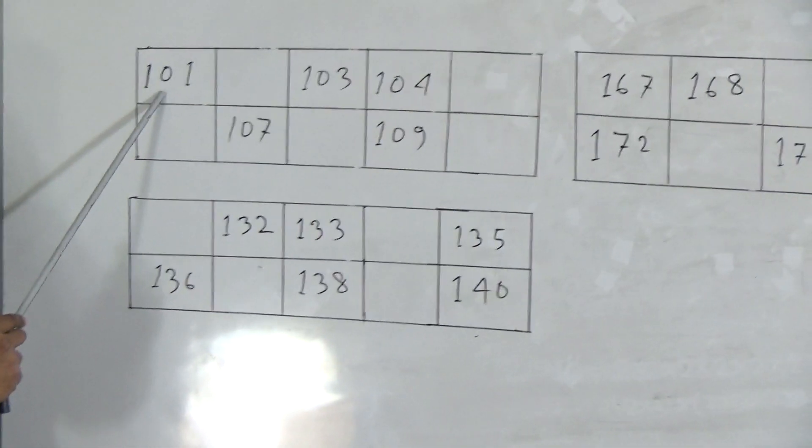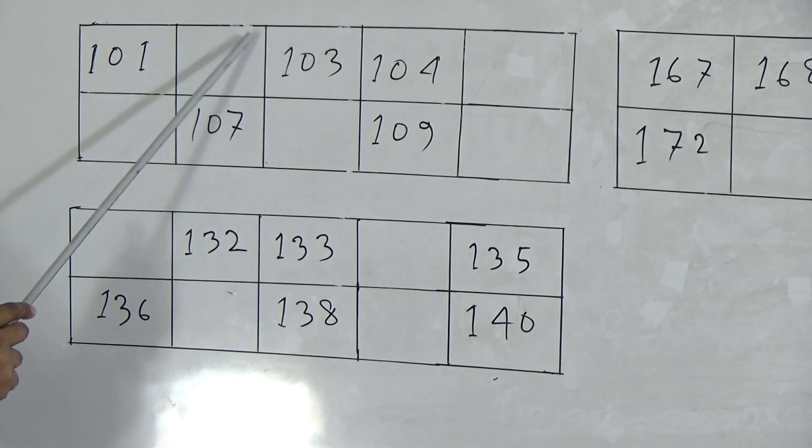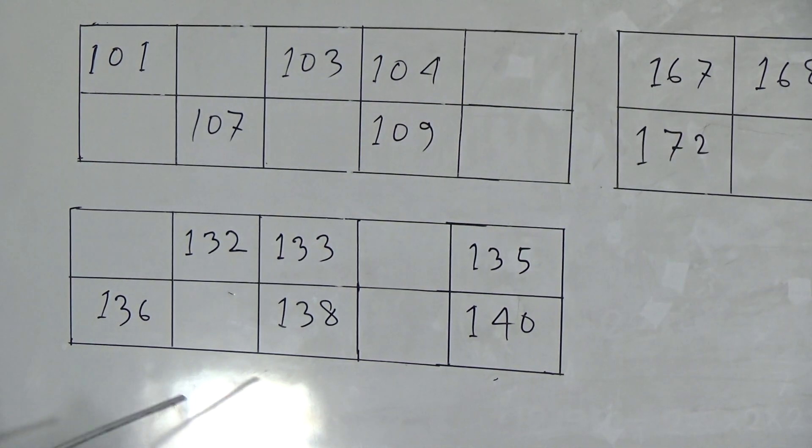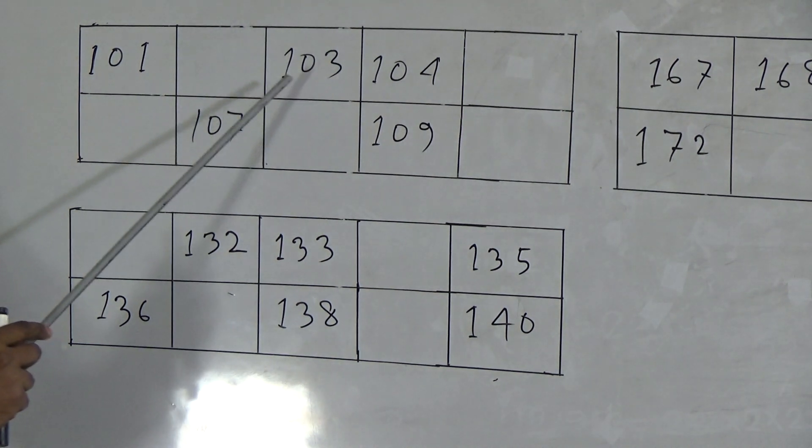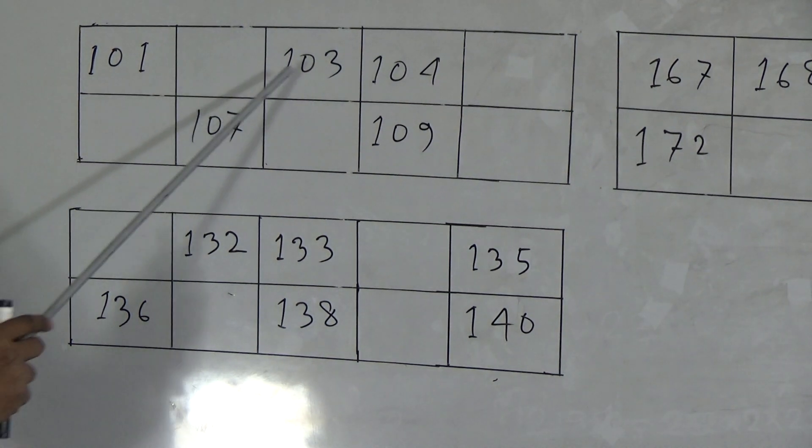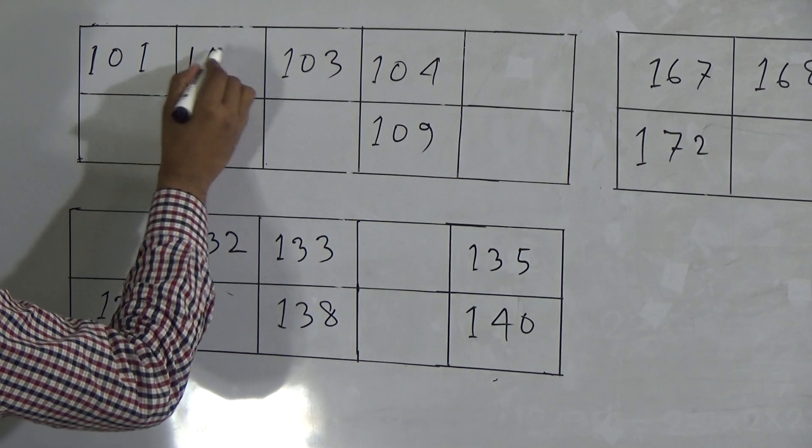Here, we are starting from 101. First number is 101 and second number missing. Now, in blank space, we have to write appropriate number. After blank space, here 103 exists. So, between 101 and 103, we have to write 102 because we know that after 100, 102 will come. So, it will be 102.